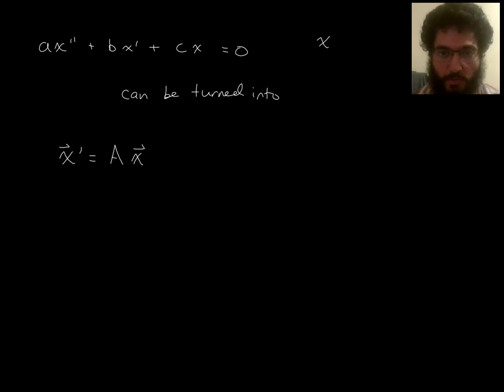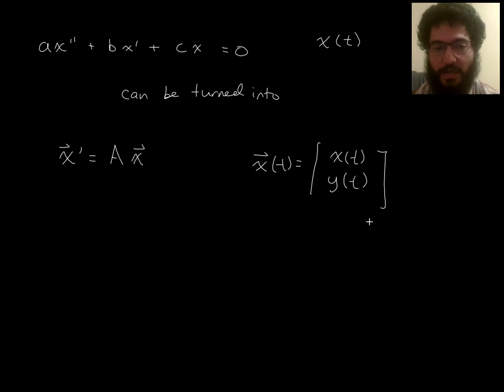Here the unknown function is just one function, x of t. Here there are two unknown functions, x of t and y of t, and then I'm going to use the vector x symbol to package them together like this. And here A is going to be some 2 by 2 matrix. So what I'm going to show is that you can turn one of these into one of these, and you can actually go the other way, turn one of these into one of these. So this kind of thing that we're studying is actually not so new of a thing. It's just that when we look at it this way, some linear algebra approaches and perspectives will become available that were not available when we were looking at it this way.